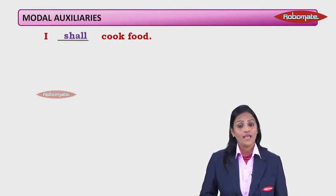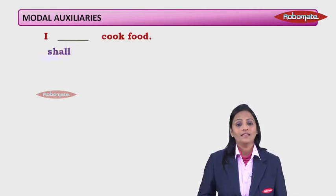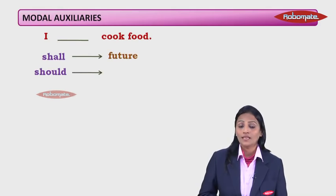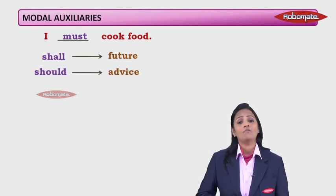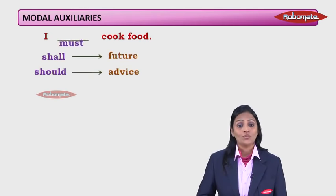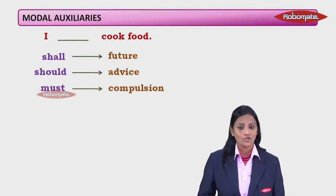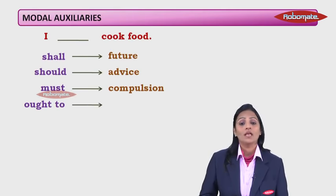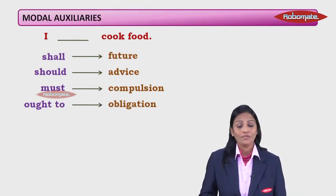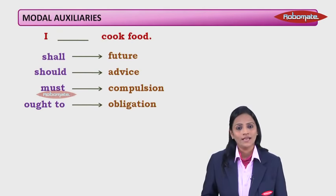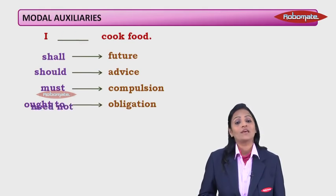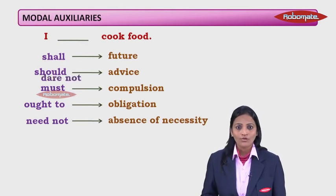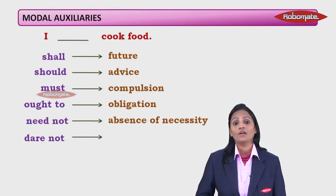'I should cook food' means advice or suggestion. 'I must cook food' shows compulsion — a stronger one. 'I ought to cook food' means obligation — something I need to do, something morally correct. 'I need not cook food' means there is no need — absence of necessity. 'I dare not cook food' means I will not have the courage — absence of courage.